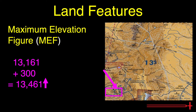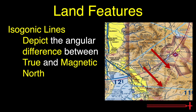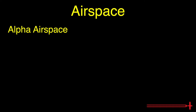In a natural-obstacle example, we are left with 13,500 feet. Lastly, isogonic lines depict the angular difference between true and magnetic north in an area. This covers land features. Time to move on to section two: airspace.